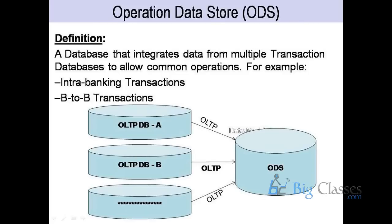Basically, what ODS does is this: suppose your OLTP systems are available at many different places. We extract the data from there. First we keep it in staging because your OLTP system or source data might not be available at the same point in time. Our approach is: whenever data is available, extract it and keep it in staging so it becomes a single source of data, but we don't do any transformation there. From staging, we extract the data and keep it into ODS.